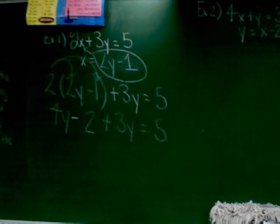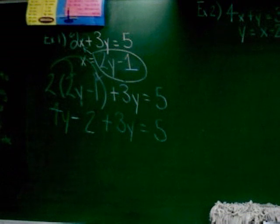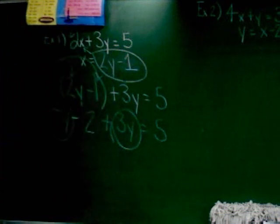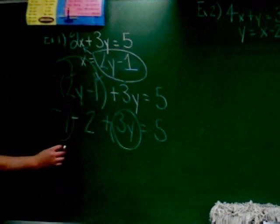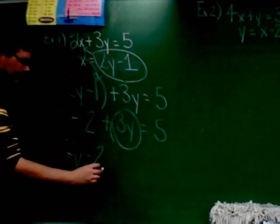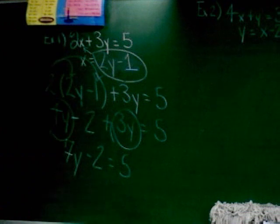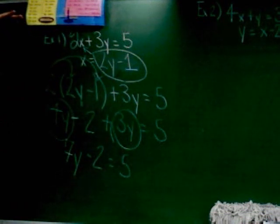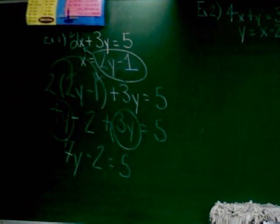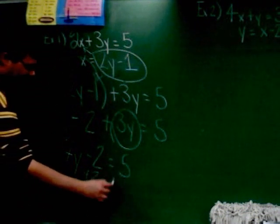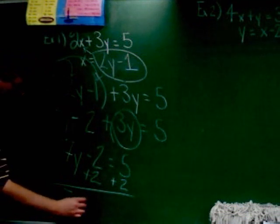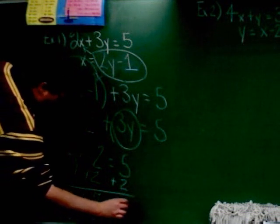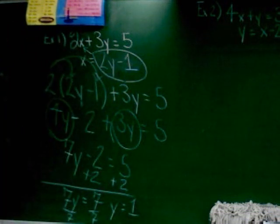So now we just follow the rules for solving equations. Remember, variables on the left side, lonesome numbers on the right side. So I've got to put 4y and 3y together. 4y and 3y make 7y. So I've got 7y minus 2 equals 5. Now, I've got to move the 2 because lonesome numbers go to the right. So I'm going to add 2 to each side. And I've got 7y equals 7. Divide by 7, you get y equals 1.